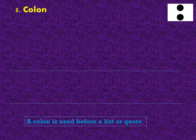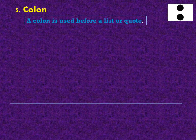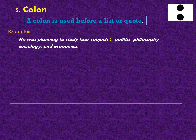Another type is colon. A colon is used before a list or quote. For example: He was planning to study four subjects — Politics, Philosophy, Sociology, and Economics.